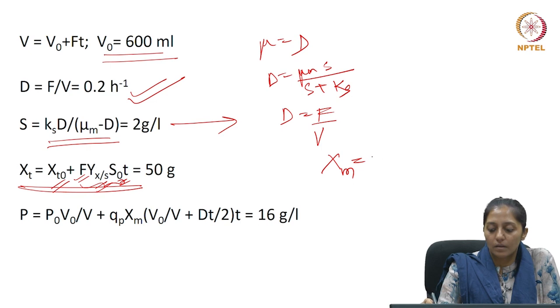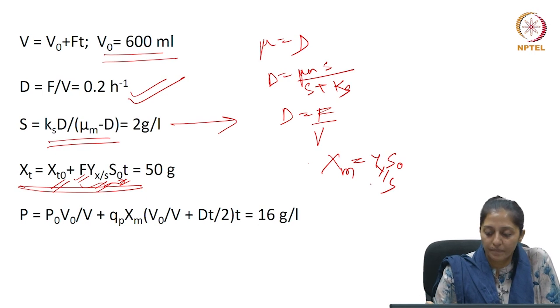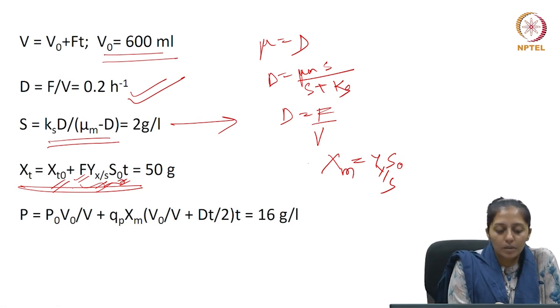So, this is the maximum biomass concentration, which is given as Y_X/Y_S times S₀.